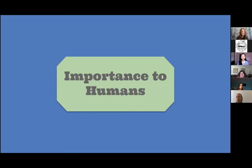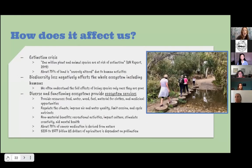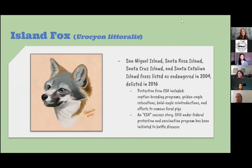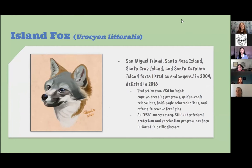Regarding the gray wolves: yes, hunting is now allowed during hunting seasons, which is another reason why the delisting is controversial — many people don't believe these populations are ready to be hunted again. As for the island fox, the feral pigs caused harm by overpopulating and hunting too many foxes. The golden eagle also hunted island foxes, and the bald eagle reintroduction helped balance the food chain to make the population more stable.